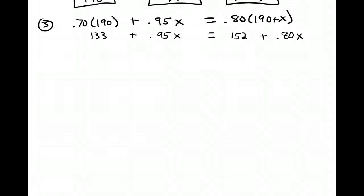When I clear my parentheses and do my multiplication, I get 133 plus 0.95x equals 152 plus 0.80x. Now in order to clear my decimals, I'm going to multiply all the way through by a hundred. That means for this number I'm going to go over two places, and that's where I put my decimal point. My new equation has no decimal values at all. This is a pretty straightforward equation to solve.